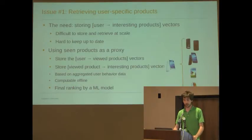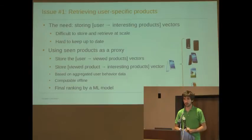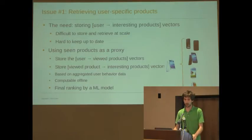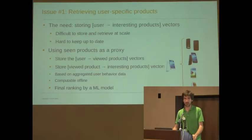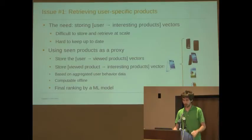What we do is, for each product that the user may have seen, we compute offline a bunch of interesting products. That is based on collaborative filtering, but not only — we are working to include more content-based data in that offline computation. This list from viewed product to a list of interesting products can be computed entirely offline on, say, a Hadoop cluster with a few hundred machines and it scales just fine. You also have to store for each user the list of items that they've seen, but that's pretty much trivial to store and maintain. If you receive a new event, you just append it to the list of user events. These two data stores allow you to generate a list of candidates that you can then rank using a machine learning model.